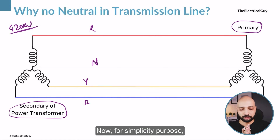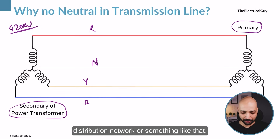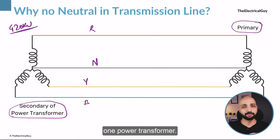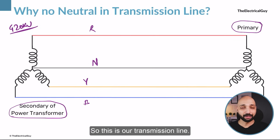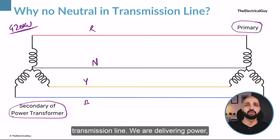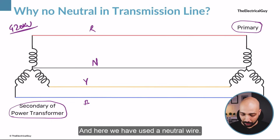For simplicity, I am not showing any generating station or distribution network — I am simply showing one power transformer secondary and the primary of the distribution transformer. This is our transmission line. Let's say this is a long-distance transmission line delivering power 100 to 200 kilometers from the generating station, and here we have used a neutral wire.